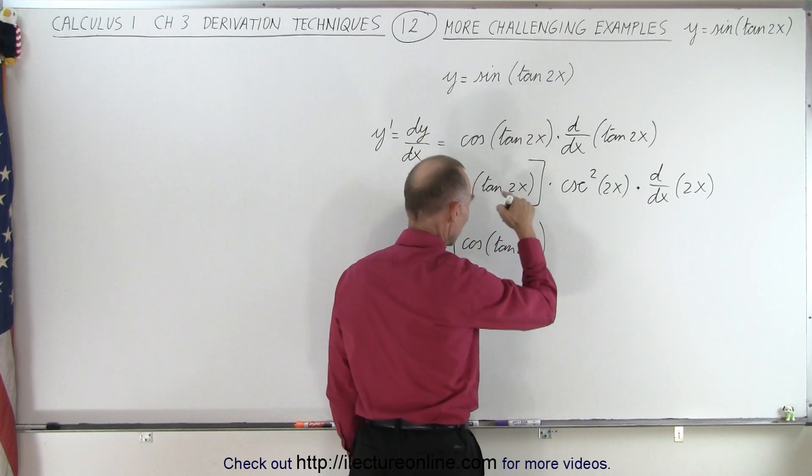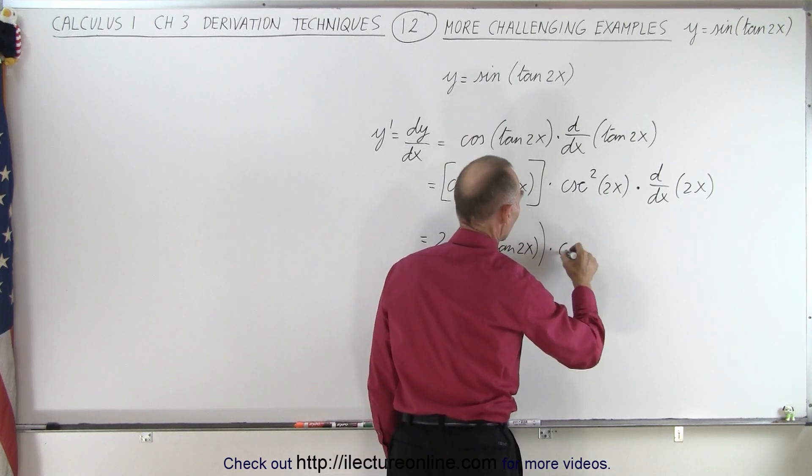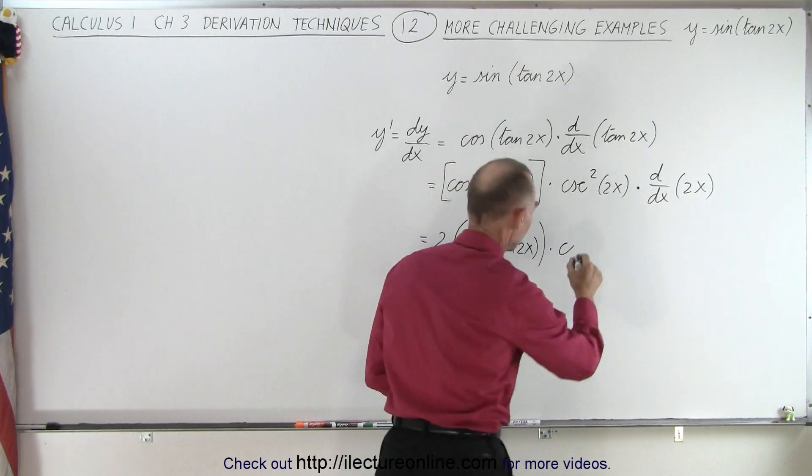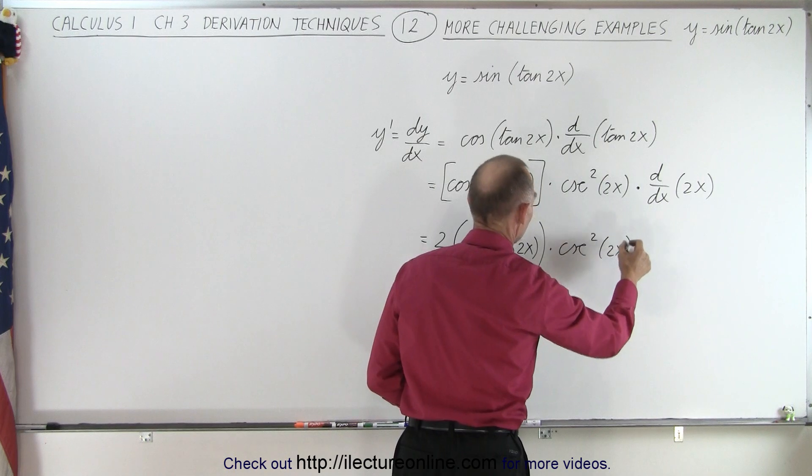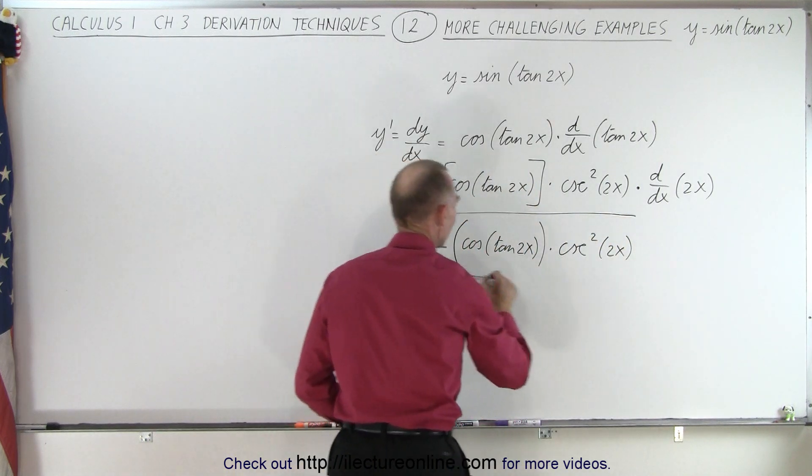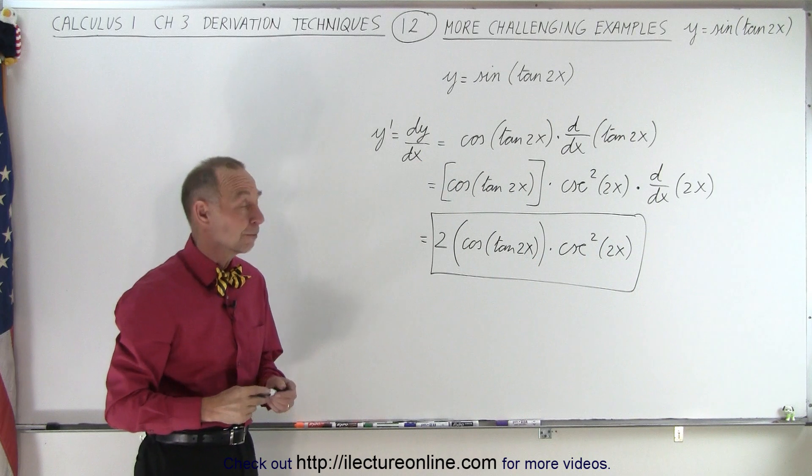I need to look a little bit more careful. 2x times the cosecant, the cosecant square of 2x, like this. And this then becomes a derivative of that original problem.